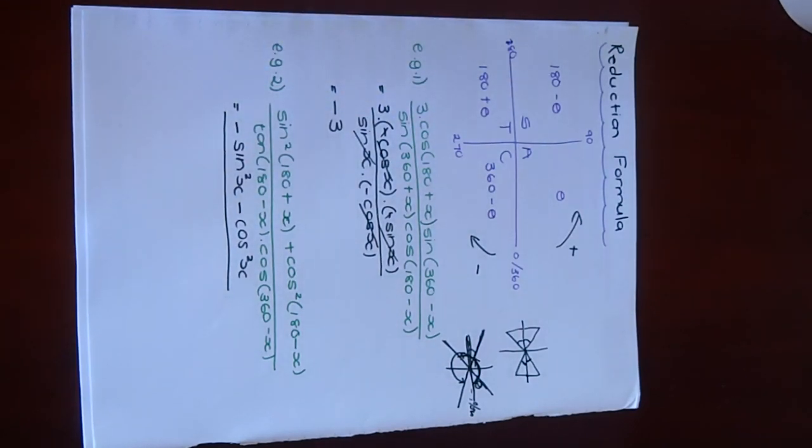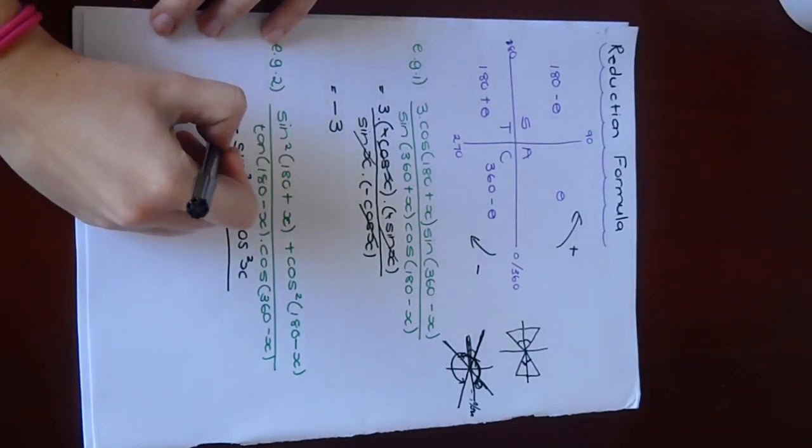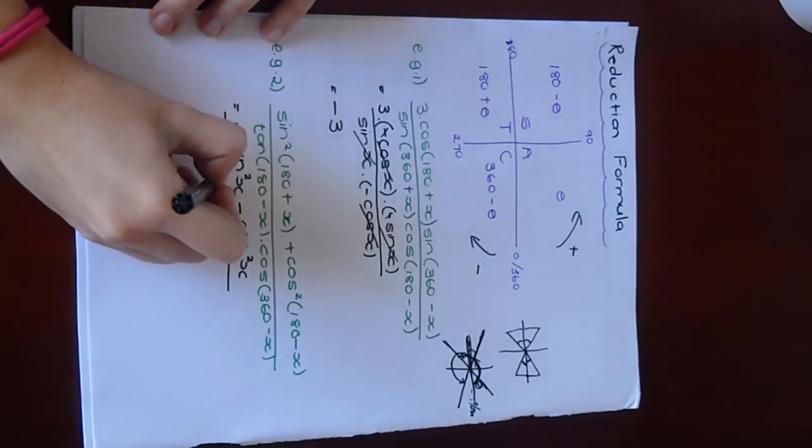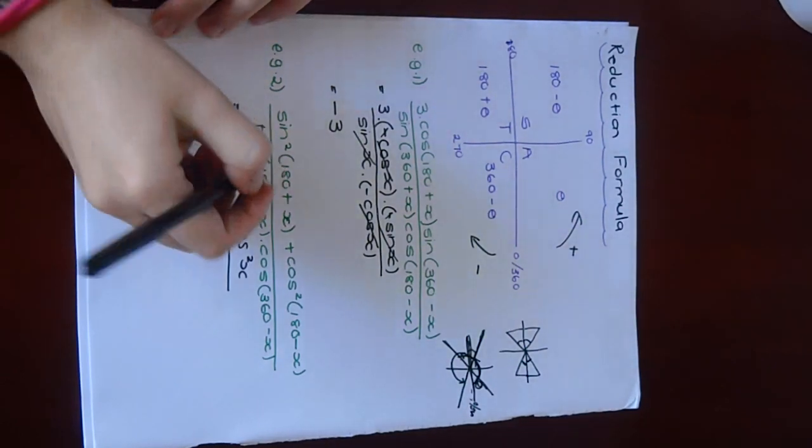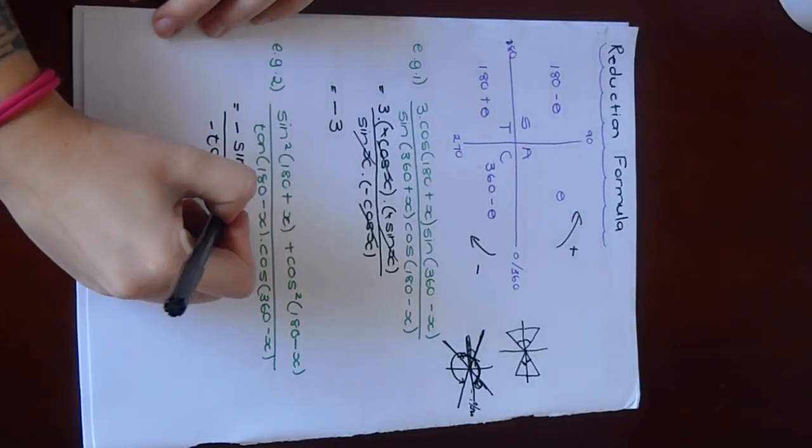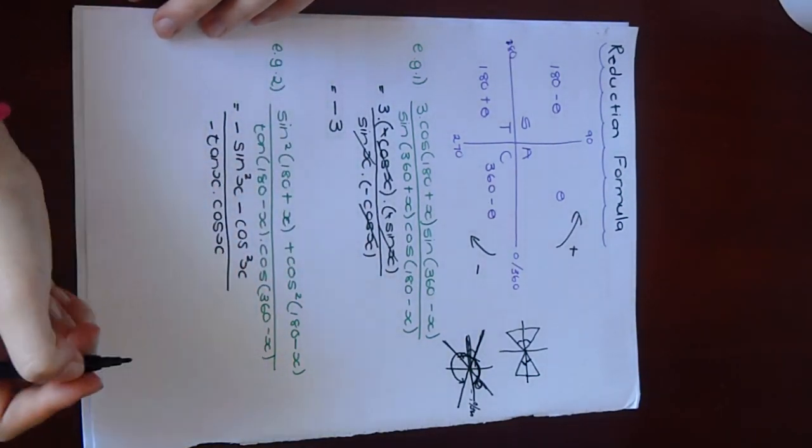All over. Tan of 180 minus theta. 180 minus theta is in the second quadrant. Here, tan is negative. Negative tan X. 360 minus is in the fourth quadrant. What is cos there? Cos is positive. So this becomes cos of X.